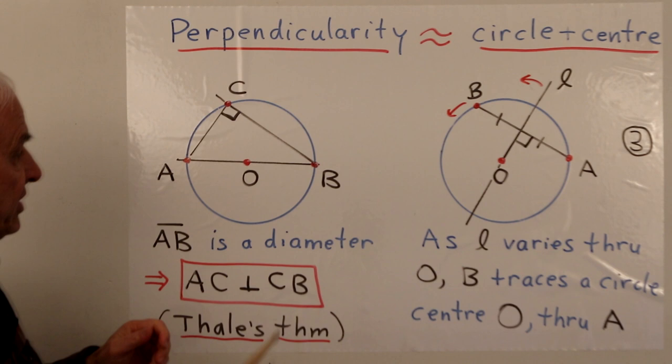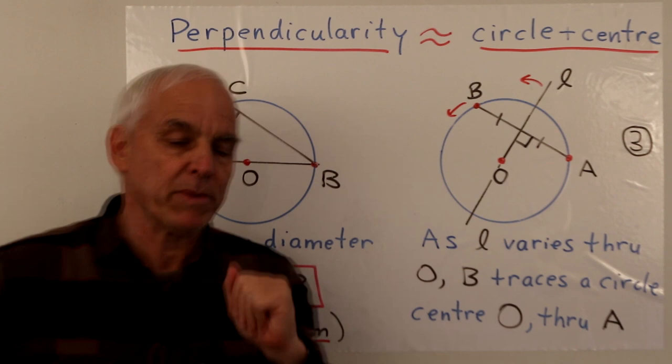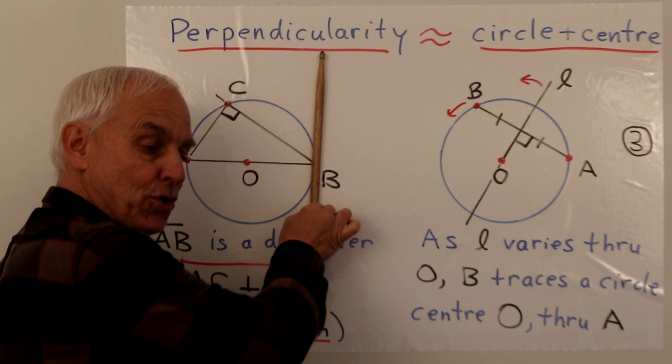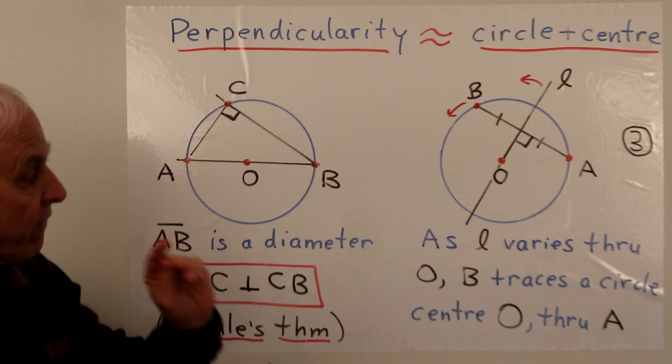Given a circle we get a notion of perpendicularity — for example, if we wanted to know what line is perpendicular to a given line, we just find that point and that gives the perpendicular line. There's another connection with perpendicularity: once we have a diameter, the tangent to the circle at either of those two points is going to be perpendicular to this diameter, to this radius. So that's another way that a circle determines perpendicularity.